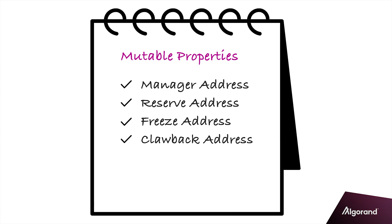Mutable properties can be changed by the manager's address and are a set of addresses of accounts or multi-signature accounts that manage and control the asset. If you don't want your asset to allow revoking, you can lock the clawback address permanently. The manager address controls all other addresses in the mutable properties and can change or lock any of the other addresses. The reserve address can be used as a store for non-minted tokens. The freeze address can issue freeze and unfreeze transactions for specific accounts, either allowing or denying an account to transact in the asset. The clawback address can issue revoking transactions and can send the token to any account that is opted into the asset.